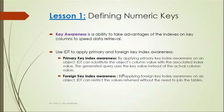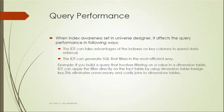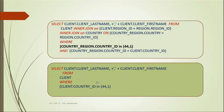Foreign key index awareness means we can use it on an object, which can restrict the values returned without the need to join tables. Query performance is a major factor when designing complex universes, so we need to set this index awareness during development. IDT can generate SQL that filters in the most efficient way — for example, if you build a query filtering on a dimension table value, IDT can apply the filter directly to the fact table using the dimension table's foreign key.